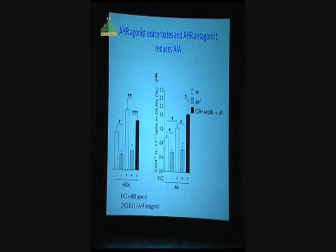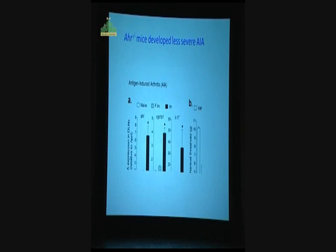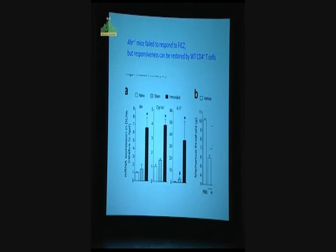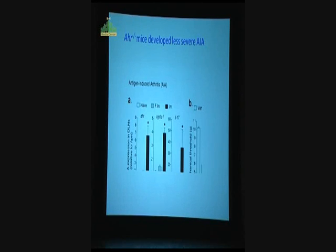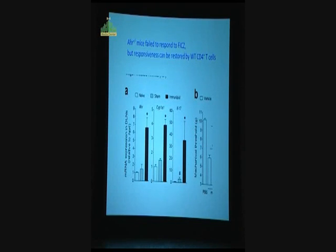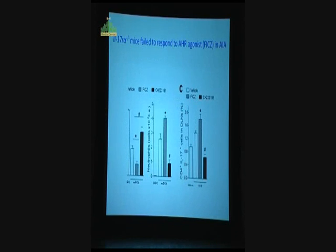I'm not sure how to explain this one. AHR knockout mice develop less severe AIA and fail to respond to FICZ, but responsiveness can be restored by wild-type CD4 T-cells. Then we use TH17 receptor knockout mice, and they fail to respond to AHR agonists.